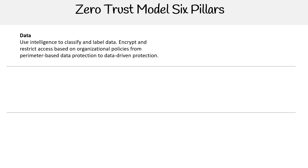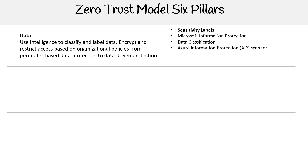We have data. Use intelligence to classify and label data, encrypt and restrict access based on organizational policies. We move from perimeter-based data protection to data-driven protection. Here we can use sensitivity labels, Microsoft Information Protection, data classification, and Azure Information Protection scanner. The AIP scanner does decision-based policies and data loss prevention policies. All of this stuff listed in the data pillar is in the Microsoft 365 Compliance Center — this is where all this stuff comes into play, which we'll see later on.